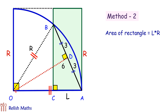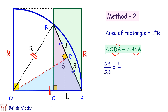Let's look at triangle ODA (the blue triangle) and triangle BCA (the pink triangle). In these two triangles, angle A is common and both have a 90° angle. By angle-angle similarity, the blue and pink triangles are similar to each other, and thus the ratio of their sides will be equal. So OA upon DA equals BA upon CA.